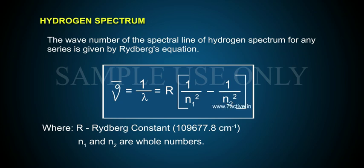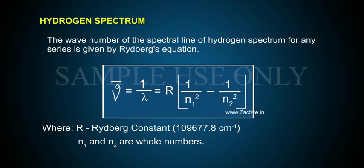Nu-bar is equal to 1 by lambda, which is equal to R into (1 by n1 squared minus 1 by n2 squared), where R is the Rydberg constant, and n1 and n2 are whole numbers.